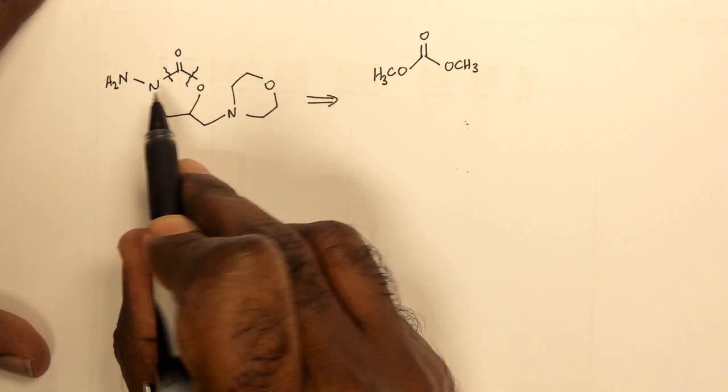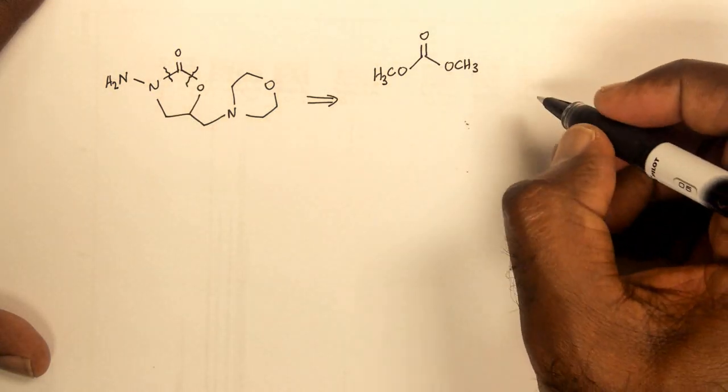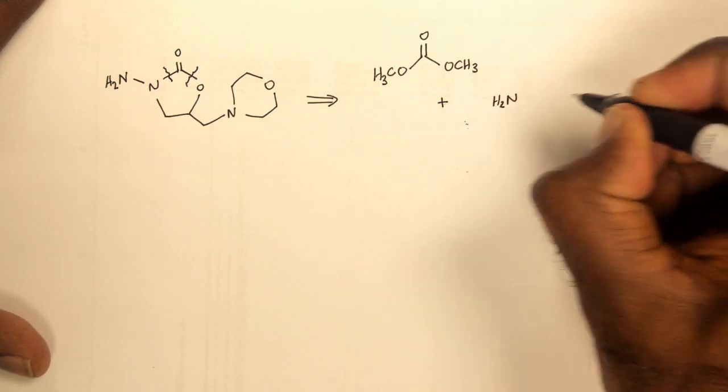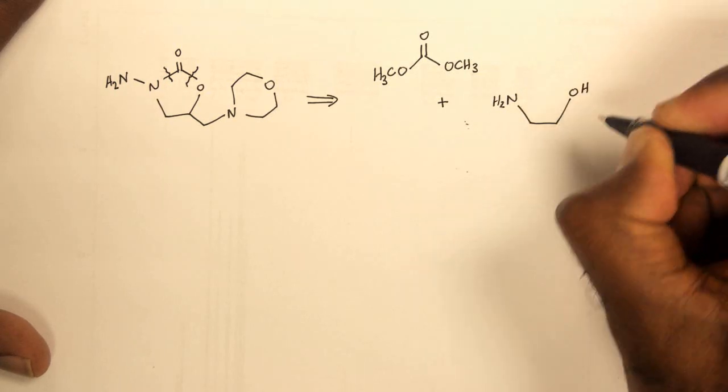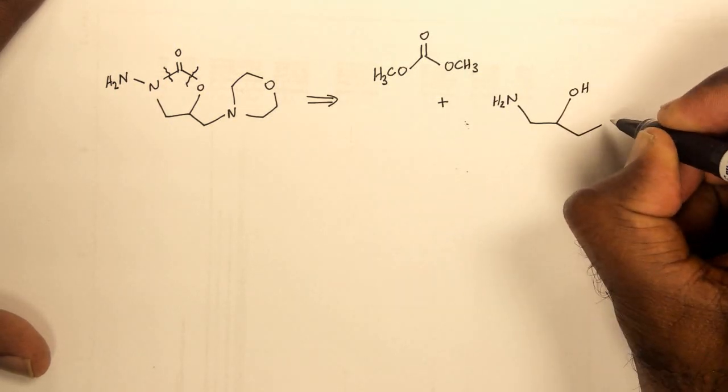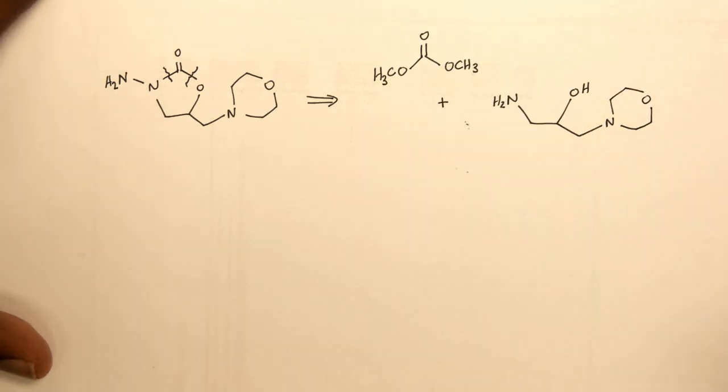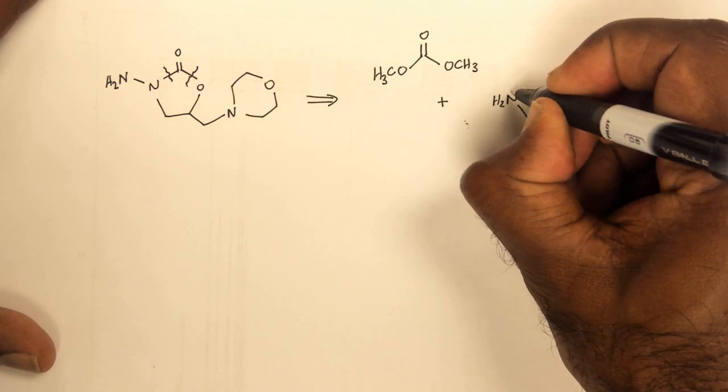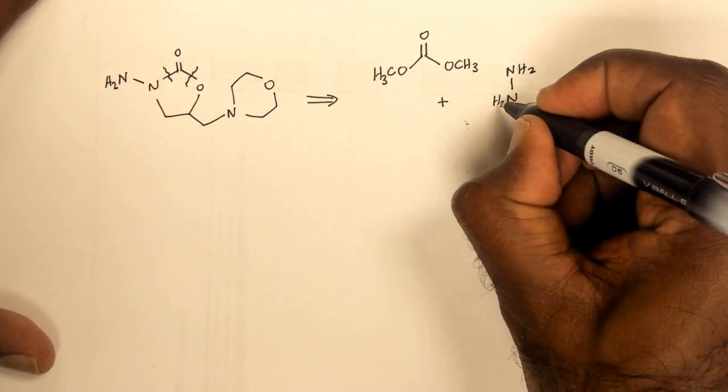Since we broke both the bonds of the N-C and the O-C bonds to the carbonyl group, we can draw the other part of the molecule. You will see that once I draw this particular molecule, we have got something that we can actually recognize.